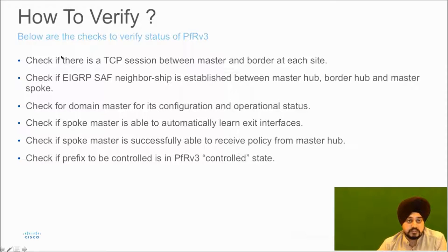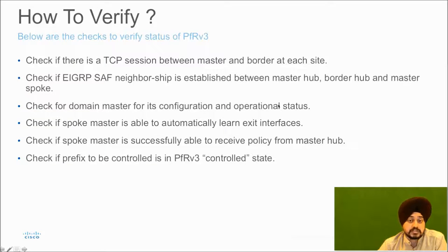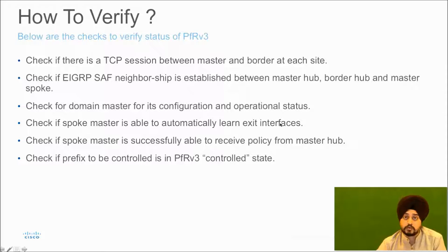First, check if the TCP session between master and border at each site is established and stable. Second, check if there is an EIGRP SAF (Service Address Family) neighborship between hub master, hub border, and spoke master. Third, check if the configurational and operational status of the domain master is up.